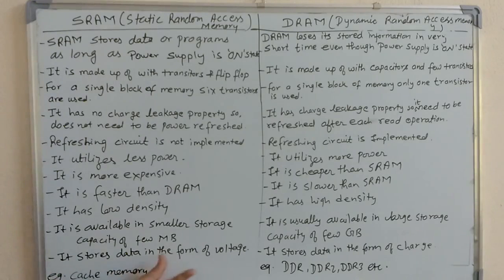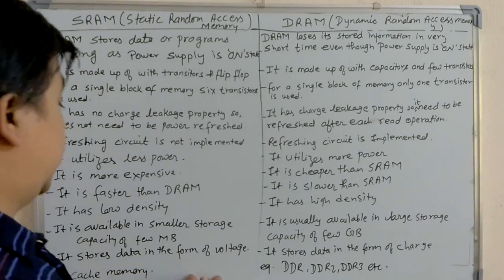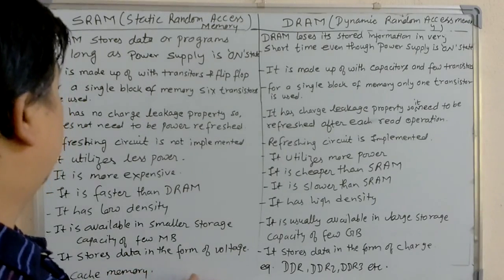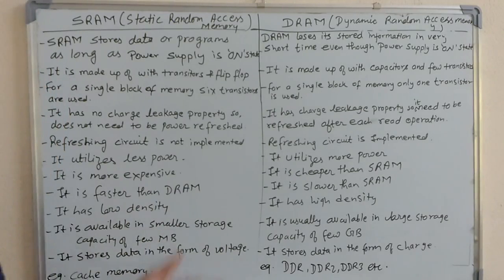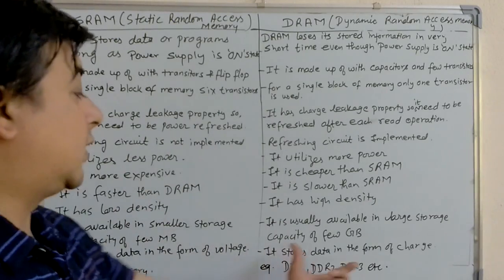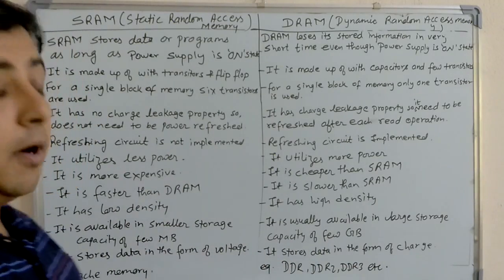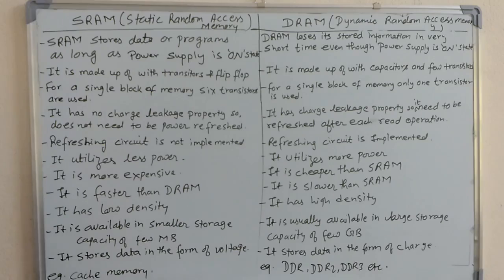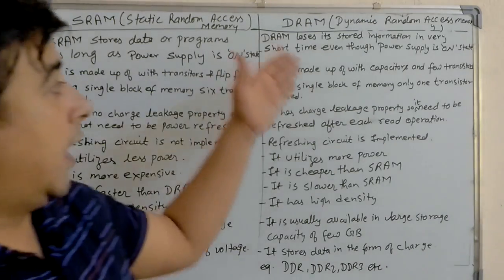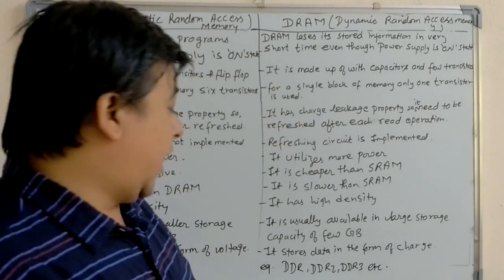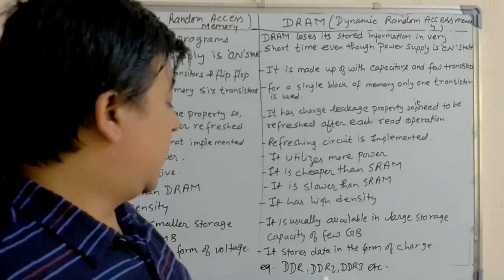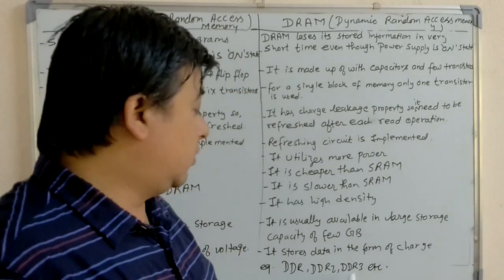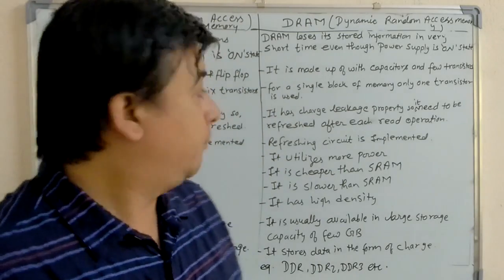SRAM stores data in the form of voltage, but DRAM stores data in the form of charge. The example of SRAM is cache memory, and examples of DRAM are DDR, DDR2, DDR3, etc.